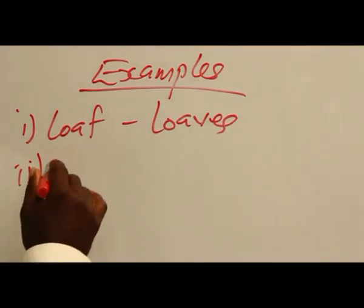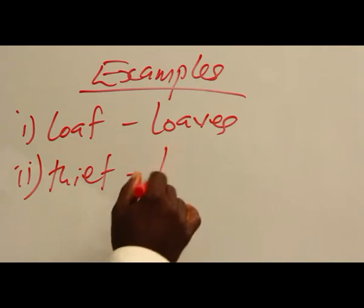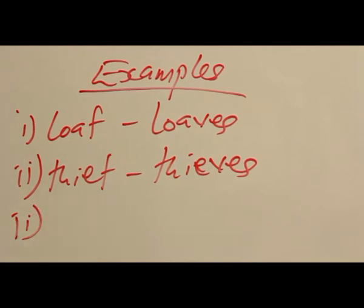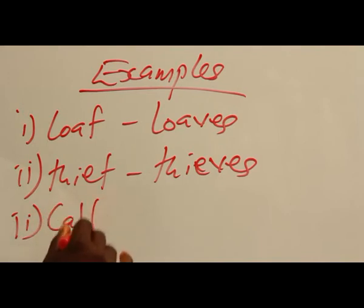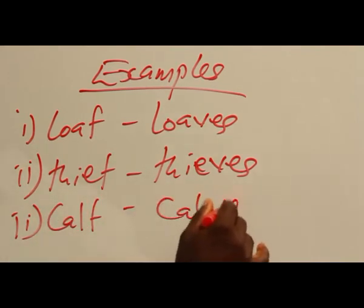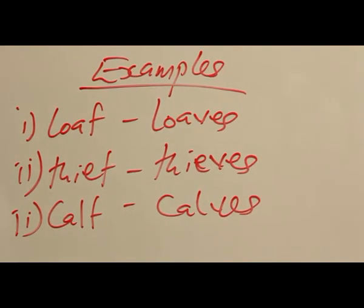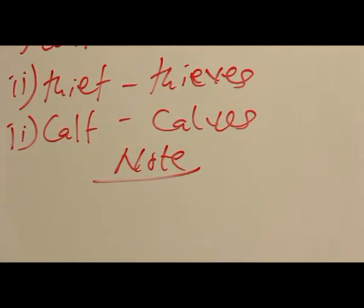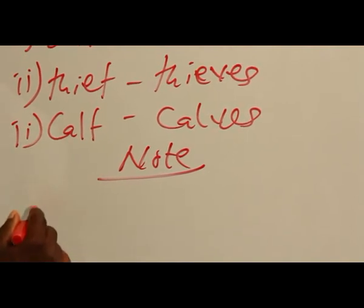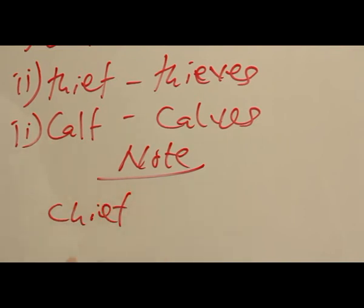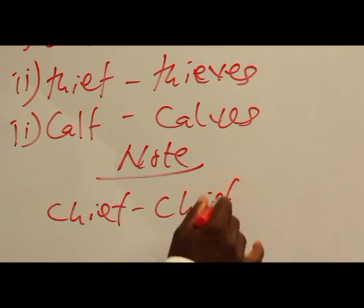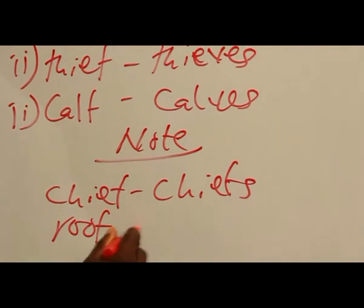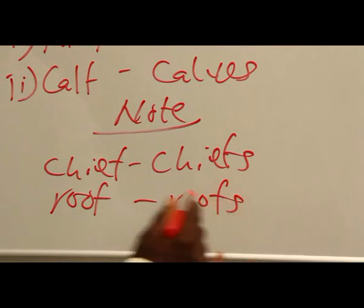We can talk about calf — the plural of calf is calves. Now, we need to note that besides these nouns, other ones ending in F will not follow this rule. Let's take chief for example: the plural of chief remains — we just add S. We can also take roof: the plural of roof is roofs, not roves.